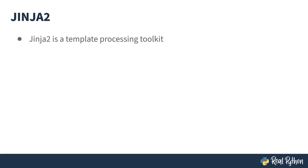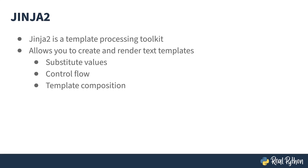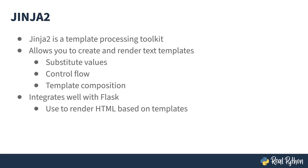Jinja2 is a template processing toolkit which allows you to create text-based templates with content value placeholders, which are then rendered into a result. Within a template, you can substitute variables, perform control flow like conditionals and looping, and compose and combine templates so you can organize your templates like you organize your code. Flask is a web application framework, and Jinja2 integrates with it quite well, where the templating is commonly used to manage your HTML output.